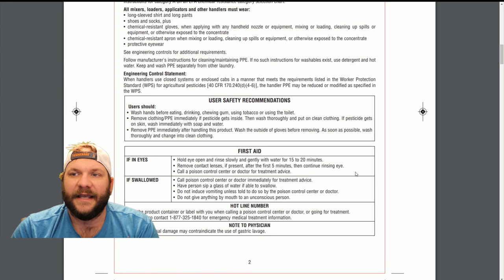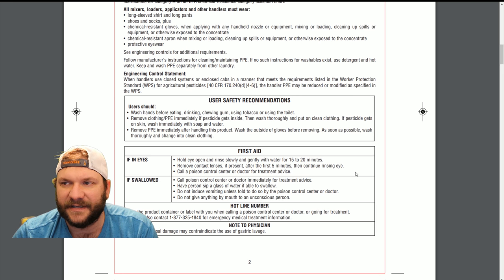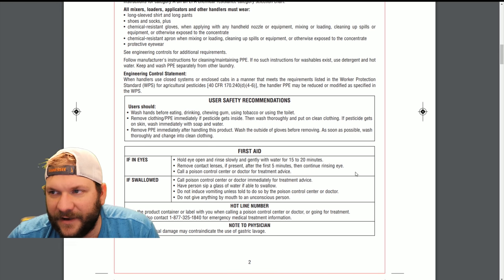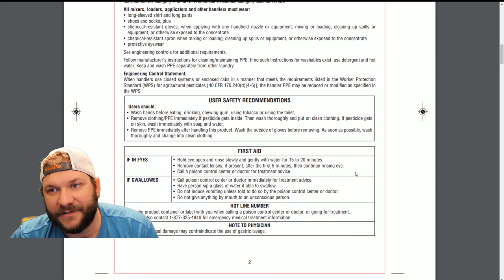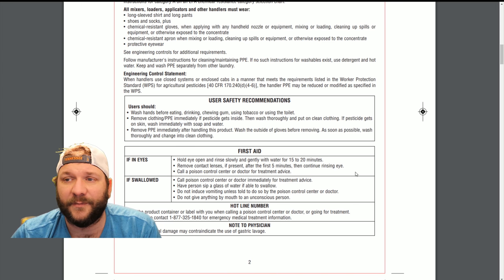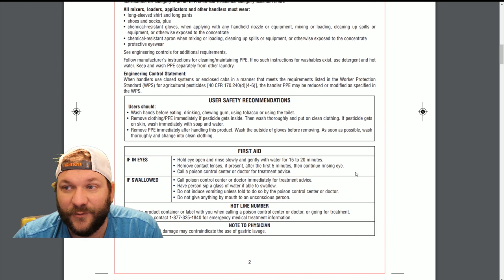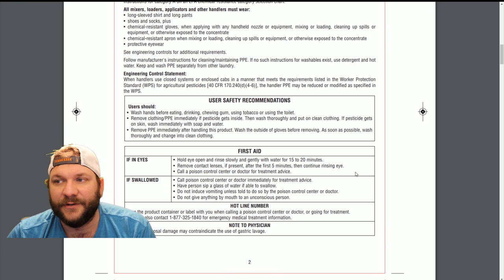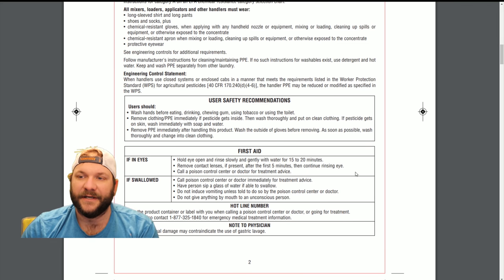First aid — this does sometimes change, so it is worth paying attention to. If you get it in your eyes, hold the eyes open and wash gently with water for 15 to 20 minutes — that's pretty standard. Remove contact lenses after the first five minutes, then continue rinsing eyes. So if you wear contacts, wash for five minutes, then remove your contacts and keep rinsing your eye. Call a poison control center. If you swallow it, call a poison control center or doctor immediately. Have the person sip a glass of water. Do not induce vomiting unless told to do so by poison control. Do not give anything by mouth to an unconscious person — you can cause them to drown.